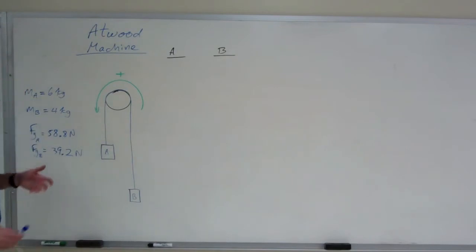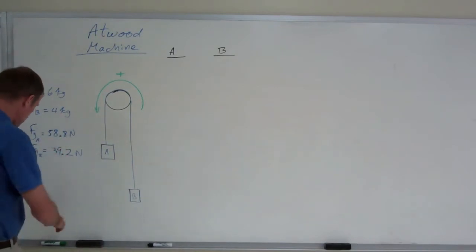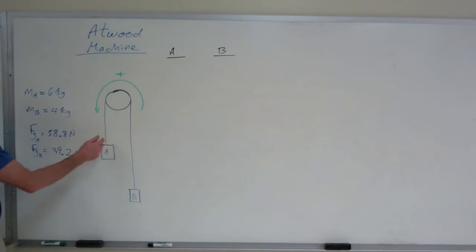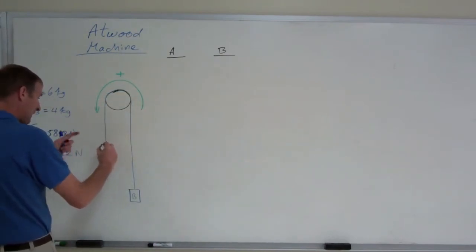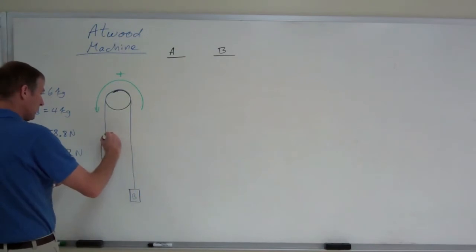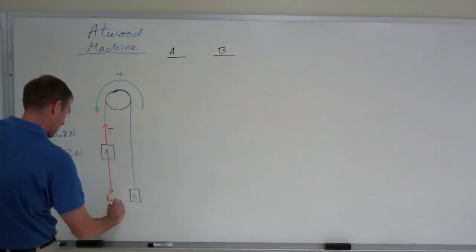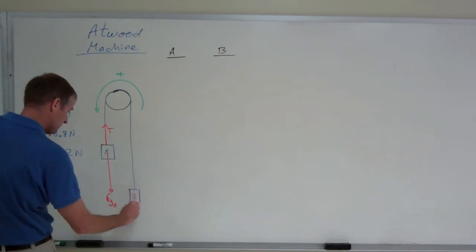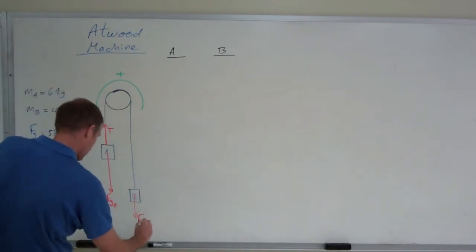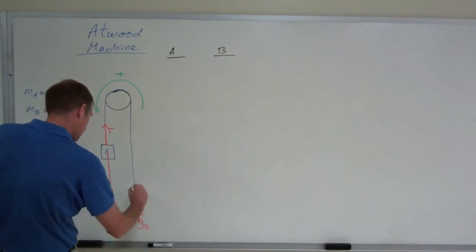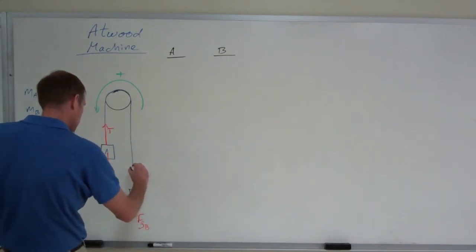We need to draw force diagrams for each of these things. For a moment, let me just draw them right on here, and then I'll go over there and solve it. But you know that the string here, A is going to go down, but the string is pulling up with the tension in A, and then A also has weight. Well, B has weight. Obviously, that's a pretty lame looking arrow, and there's tension pulling up on B.